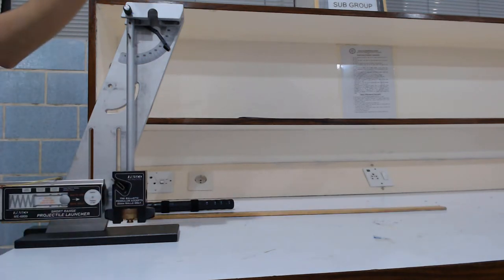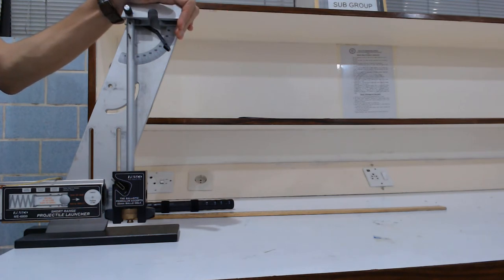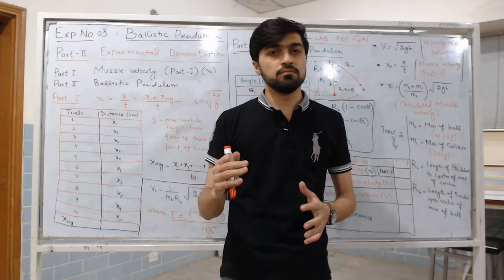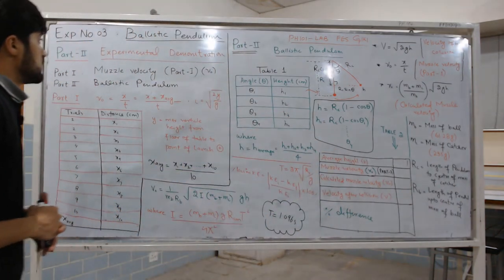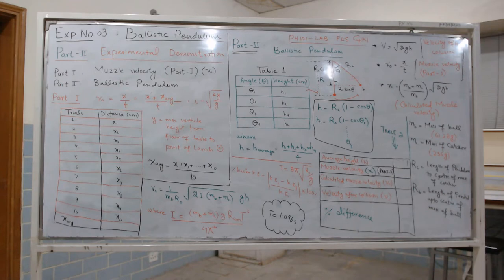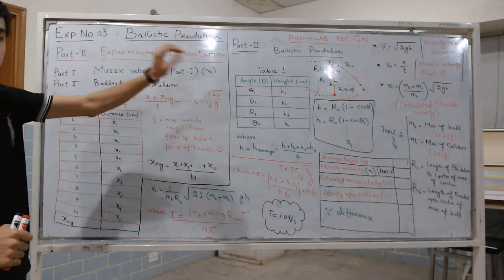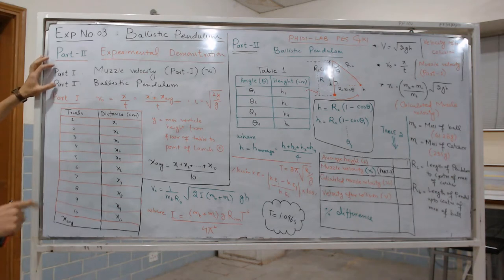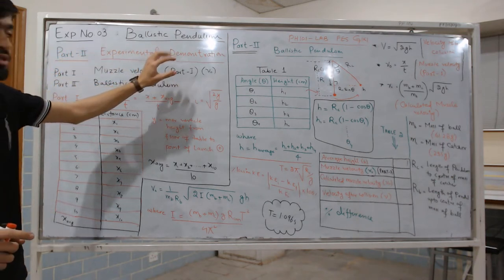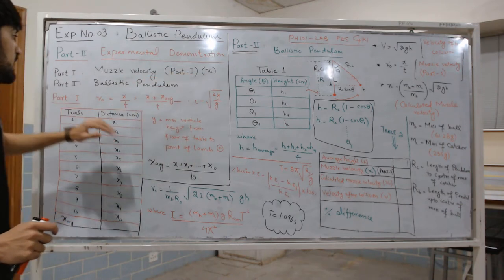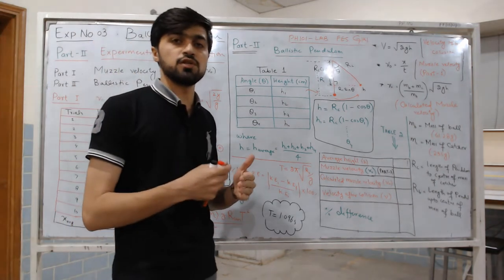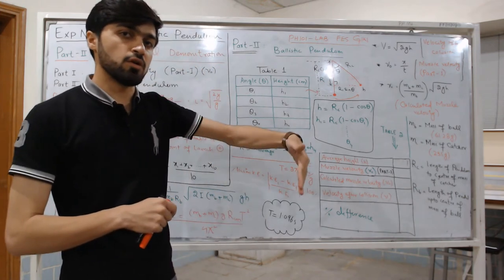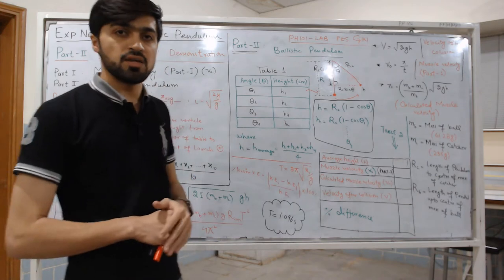Repeat four trials. Now let's move to the whiteboard to explain the calculations. After the experimental demonstration, there are two parts of calculations. The first part is the muzzle velocity calculation — part one V0. The second part is the ballistic pendulum, which involves the inelastic collision: the ball strikes the catcher, imparting velocity V to the catcher.